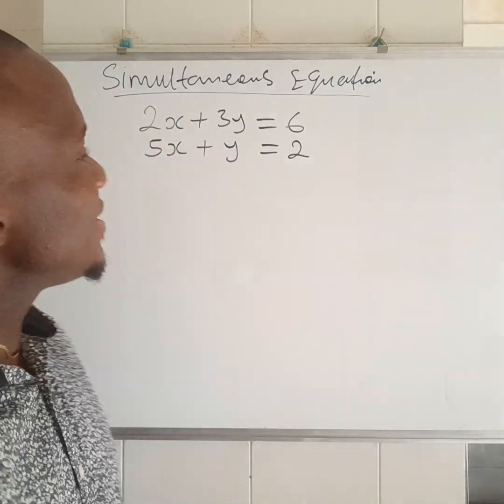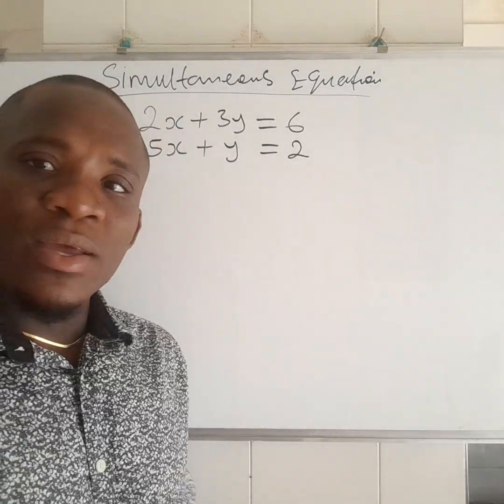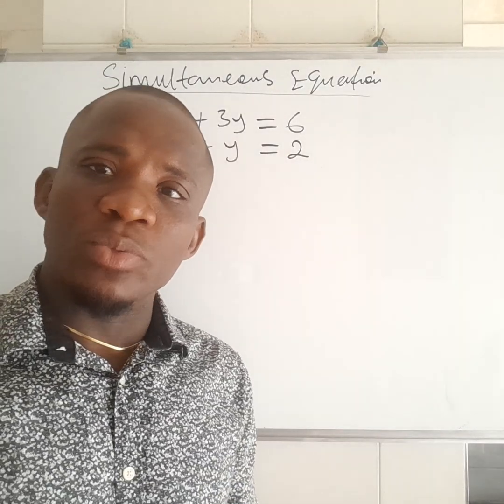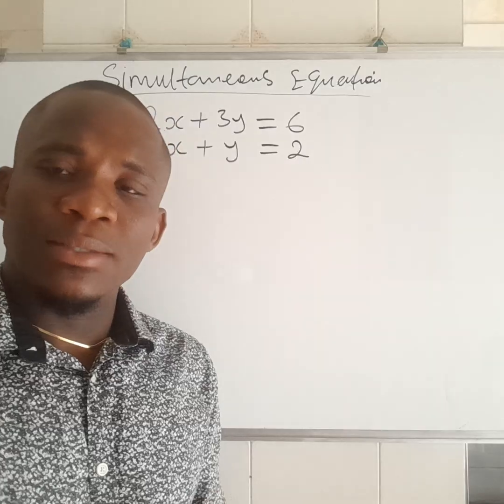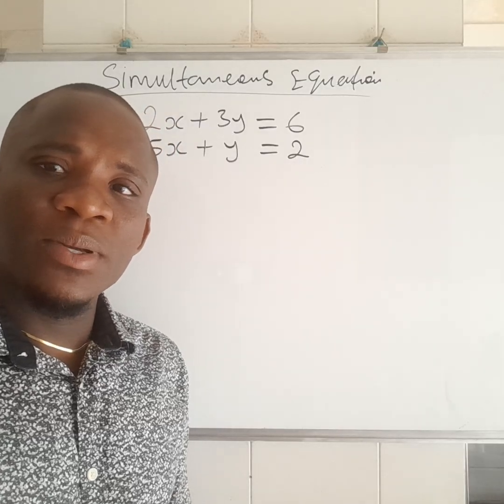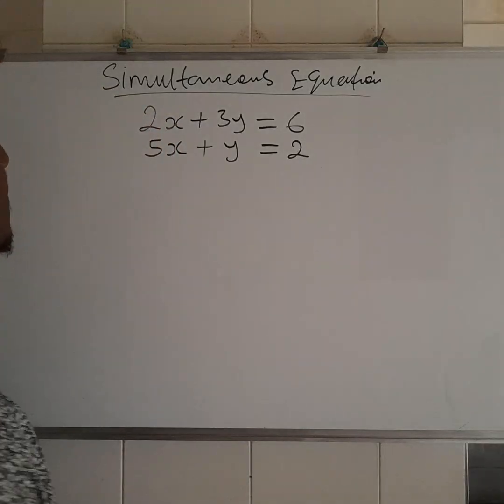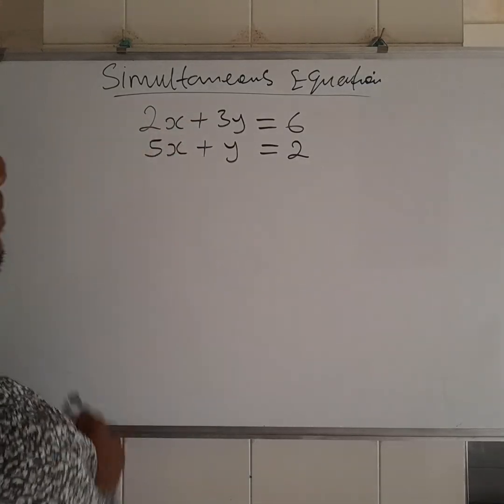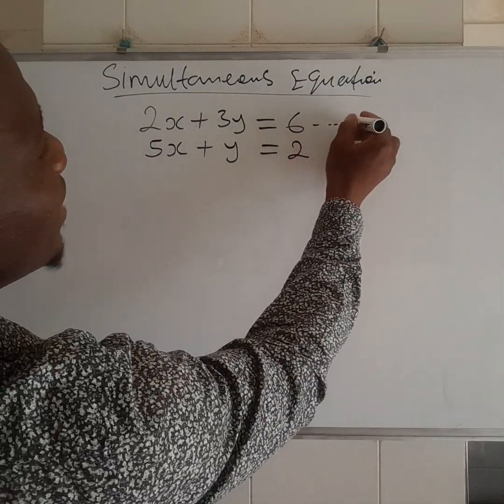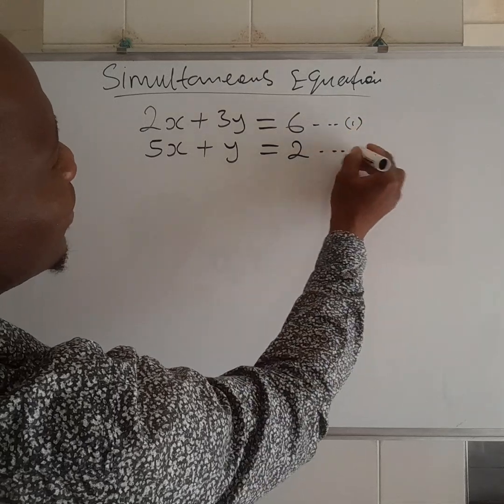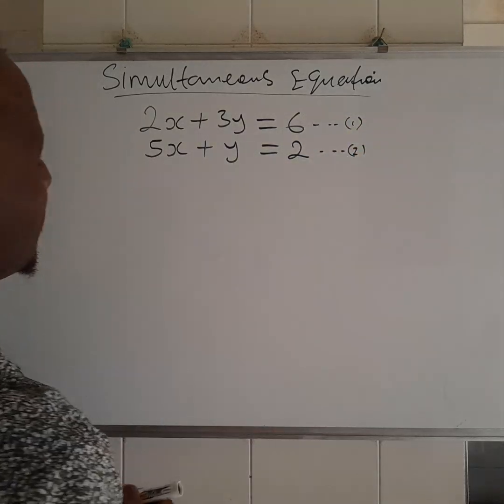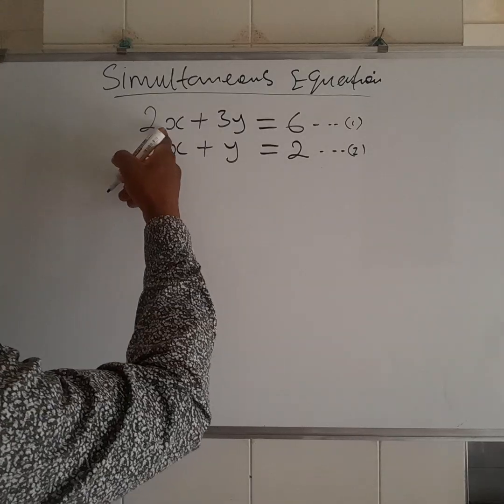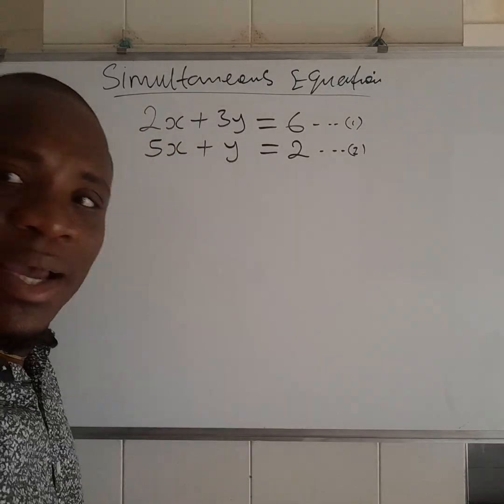To eliminate means to do away with something. Here, we can either eliminate x or eliminate y by making their coefficient to be the same before we can eliminate any of them. So, from here, let's choose x. We want to eliminate x. We name here our equation 1, we name this our equation 2. If you want to eliminate x, you make the coefficient to be the same before you can eliminate.